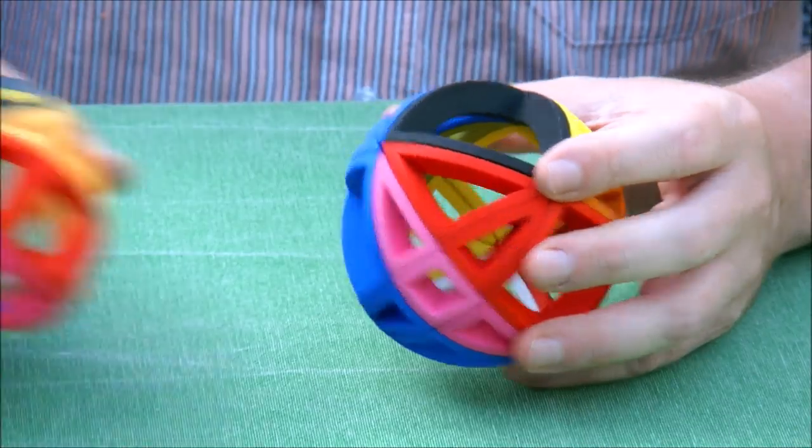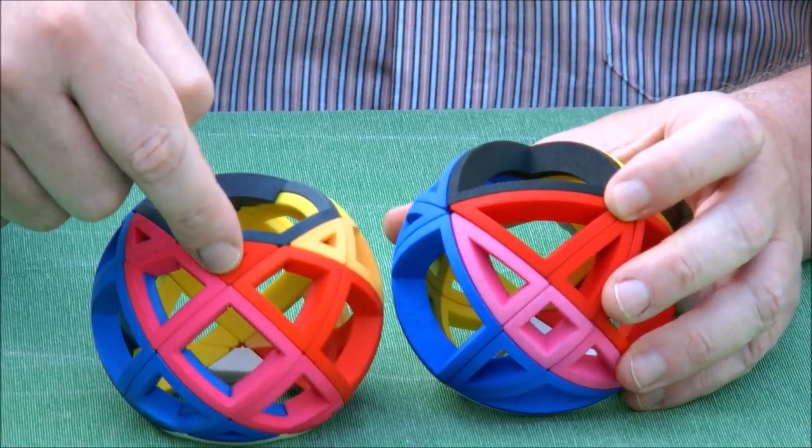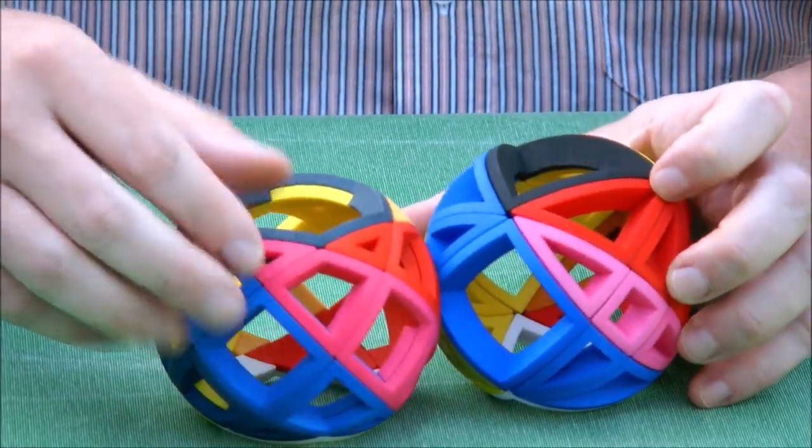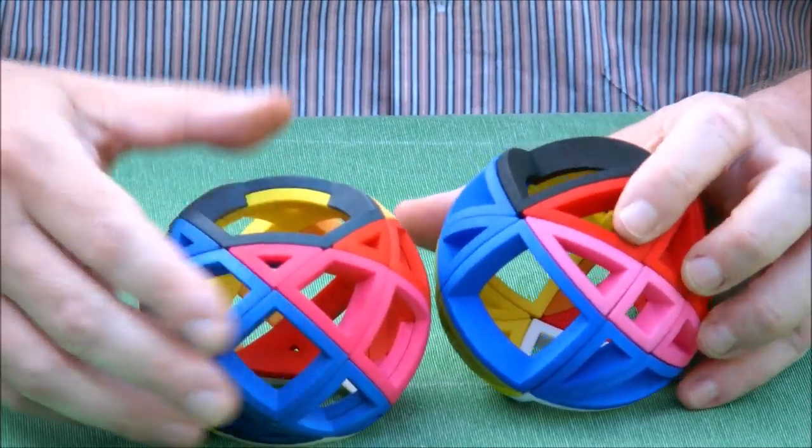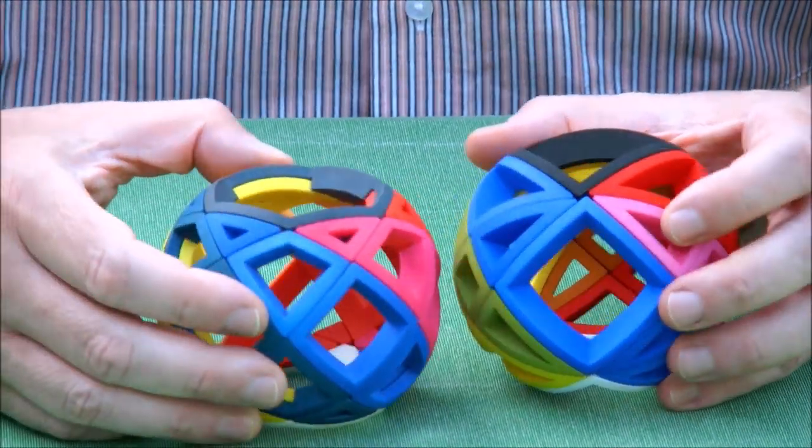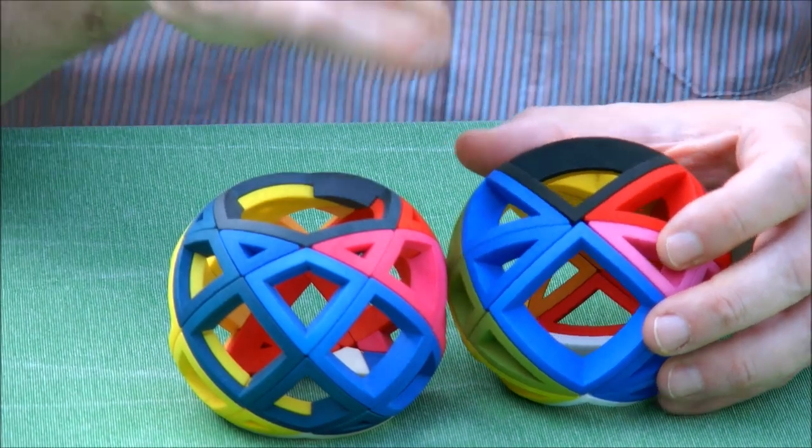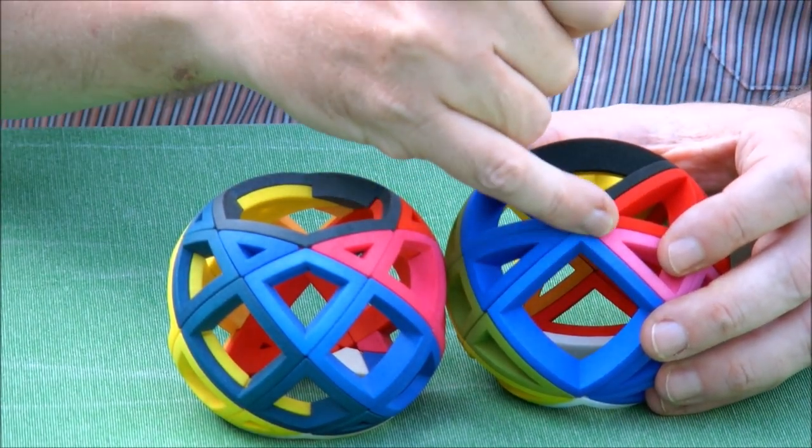Each of the pieces here have an equivalent there. So this red piece corresponds to that one. The pink one to the pink one. But there is one special piece that has no equivalent. At this place, there is a very tiny piece.